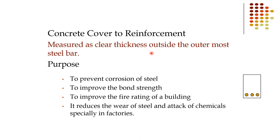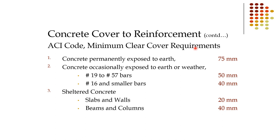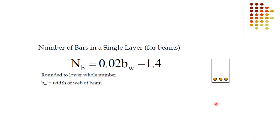Minimum clear cover requirements per ACI code: For concrete permanently exposed to earth (e.g., foundations): 75mm. For concrete occasionally exposed to earth or weather: 50mm for bars #19 to #57; 40mm for bars #16 and smaller. For sheltered concrete in plazas and residential buildings: 20mm for slabs and walls; 40mm for beams and columns.